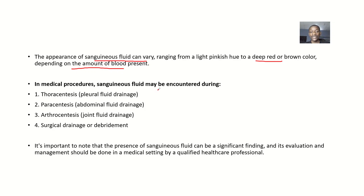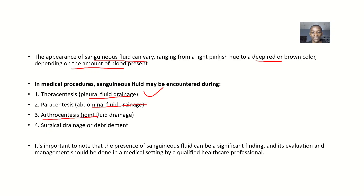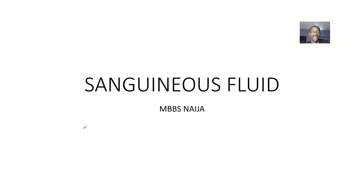In medical procedures, sanguinous fluid may be encountered during thoracocentesis — which is basically pleural fluid drainage, so if you are draining fluid from the pleural cavity you might encounter this. Then paracentesis, which is basically abdominal fluid drainage. Arthrocentesis, which is basically joint fluid drainage. And surgical drainage or debridement. All these are medical procedures where you can actually encounter this fluid.